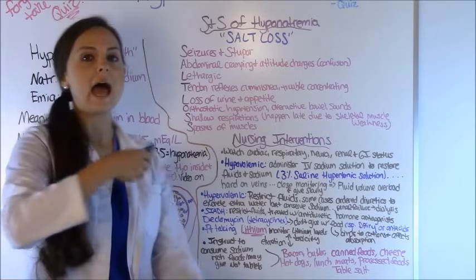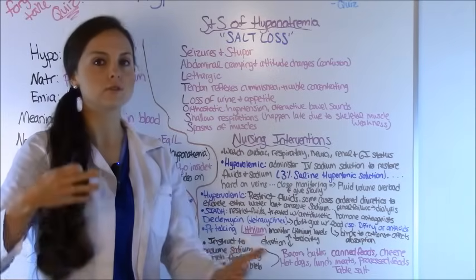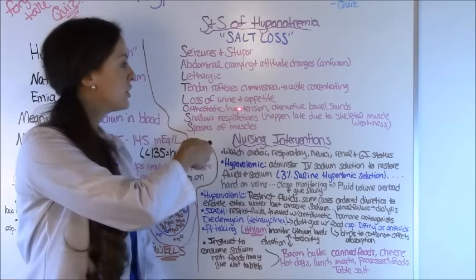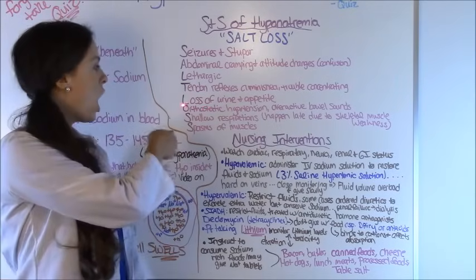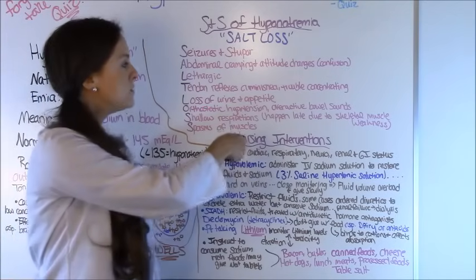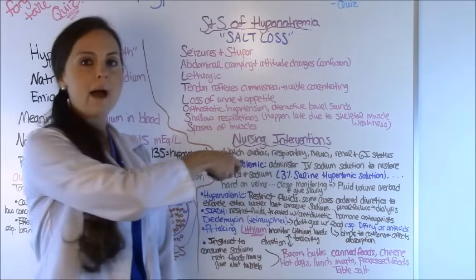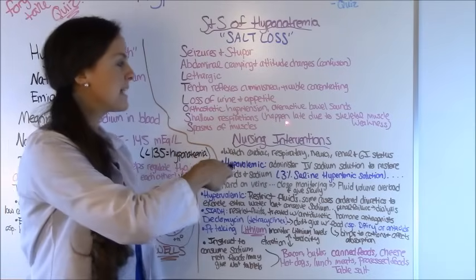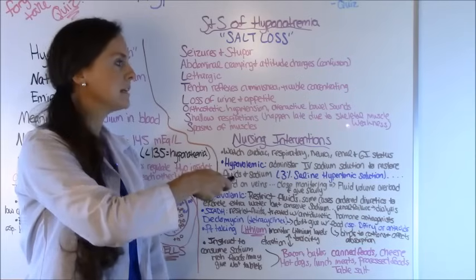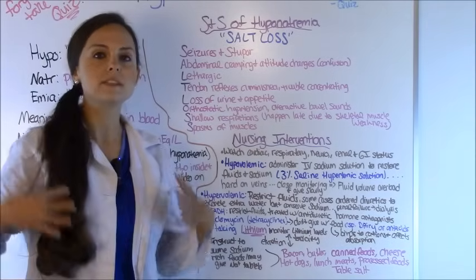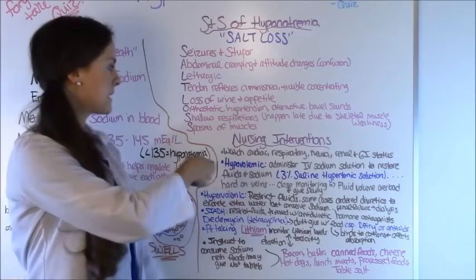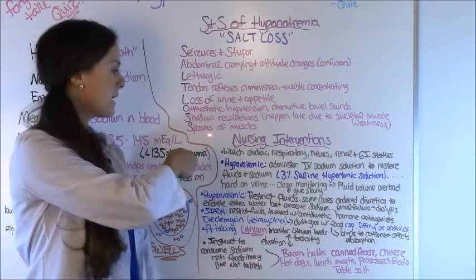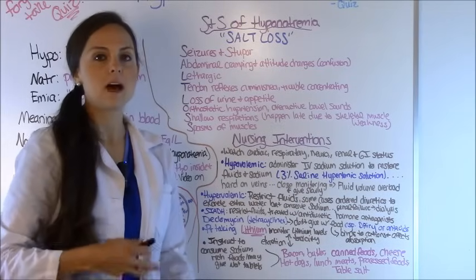Continuing the SALT LOSS mnemonic — L: loss of urine and appetite. O: orthostatic hypotension and overactive bowel sounds. S: shallow respirations — this happens late and is due to weakness of the skeletal muscles, so that will be a late sign, not something you'll see at first. And the last S: spasms of the muscles.